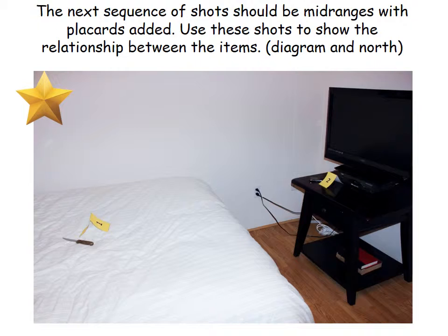The next sequence of shots should be mid-ranges with placards added, using these shots to show the relationship between items. We've gone back to doing a mid-range shot showing the relationship between item number one — the knife — and item number two — the cell phone. You'll notice I orient my placards so they face north, which is the left side of your screen. If you have a horizontal scale affixed to your placards, you can point that toward the north. One reason is that if you're using your photographs to create a crime scene diagram, it's helpful to know which way you're oriented when looking at these items.